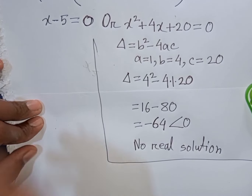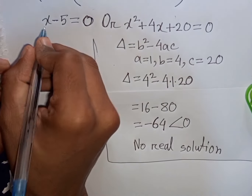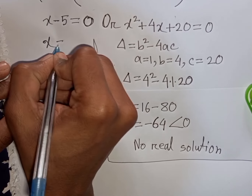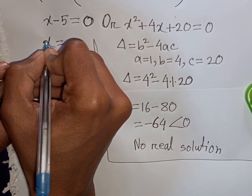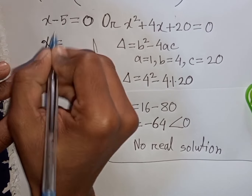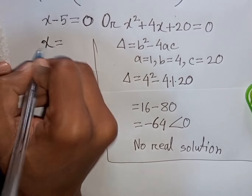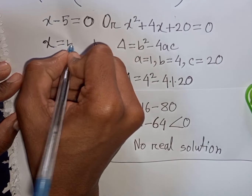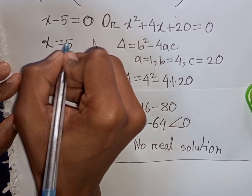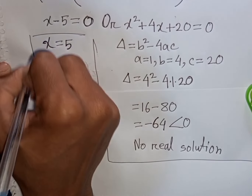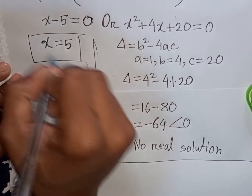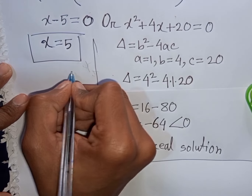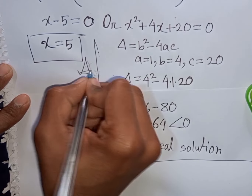From here, x minus 5 equals 0. Taking minus 5 to the right side gives plus 5, so x equals 5. This is the value of x — this is our final answer.